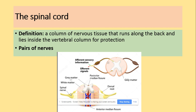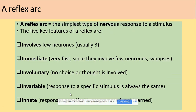The reflex arc, as we've seen in past paper questions, is the simplest type of nervous response to a stimulus. There are key characteristics: they involve only three neurons — the sensory, relay/intermediate, and motor neuron. It's immediate — a really fast response. Imagine you are touching a really hot kettle; your hand will move away straight away. This increases the chance of survival and provides protection. And it's involuntary — we have no choice.